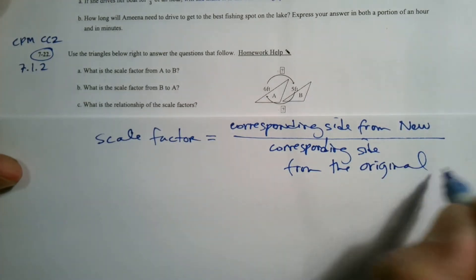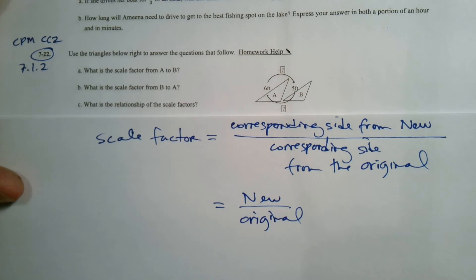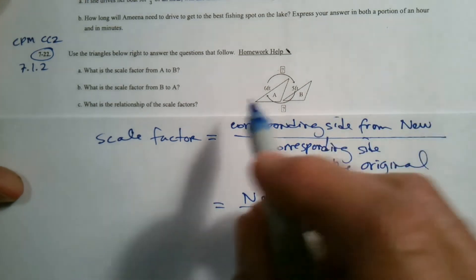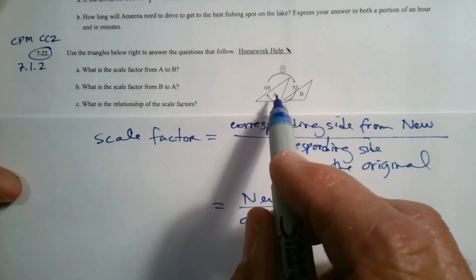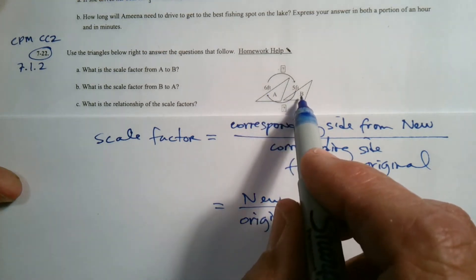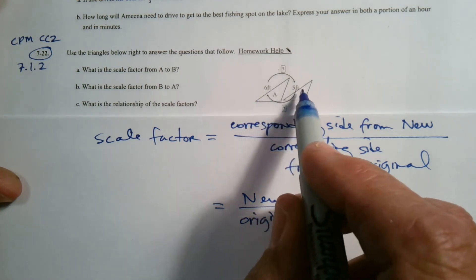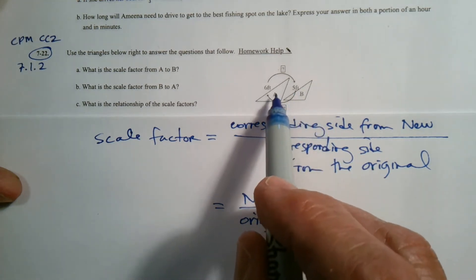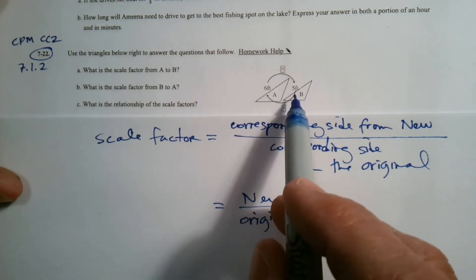In short, it's always new over original. So if I'm looking at this and I want it to go from A to B, I want to know what is the scale factor from A to B. A being the original, B being the new, going from A to B. If I took A, what did I do to it to make B? The other thing is from A to B is big to small, so I know I'm going to have a fraction less than one.